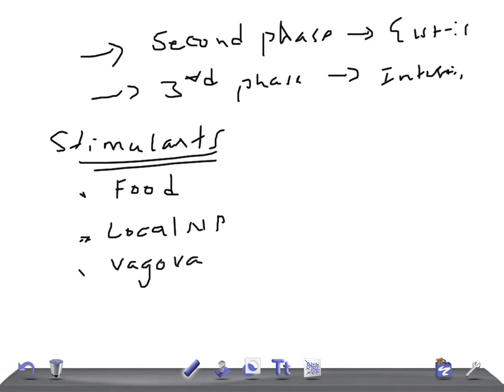The vagal reflex occurs during the gastric phase of gastric secretion. The gastrin-releasing polypeptide (GRP) is released at the vagal nerve endings and it causes the secretion of gastrin by stimulating the G-cells or TG-cells. This is exactly how the vagal reflex acts.